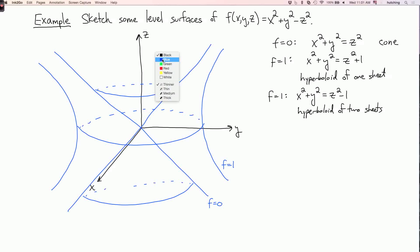Let's draw that in our picture. There's an upper sheet, which is sort of inside the upper part of the cone, and a lower sheet, which is inside the lower part of the cone. So this is the level surface, f equals minus one.